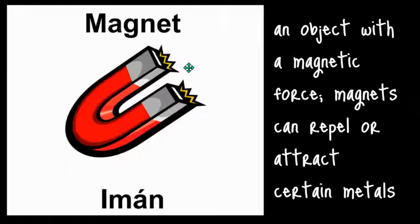Remember, repel means to push away and attract means to pull together. So here we have a picture of the object, which is a magnet. The picture is showing these yellow lines to represent the magnetic force.